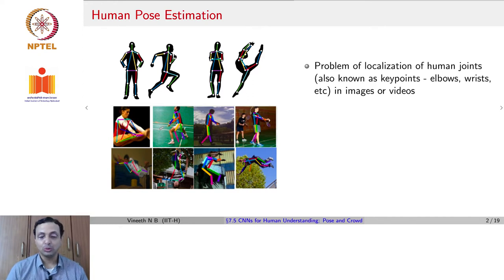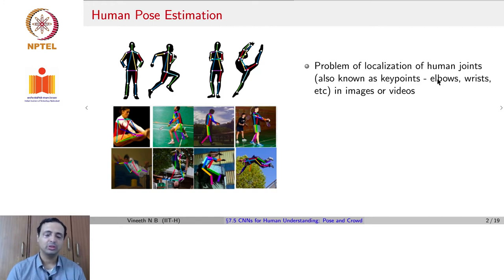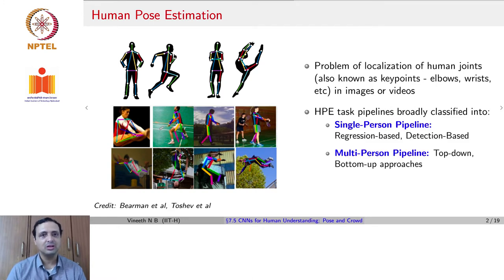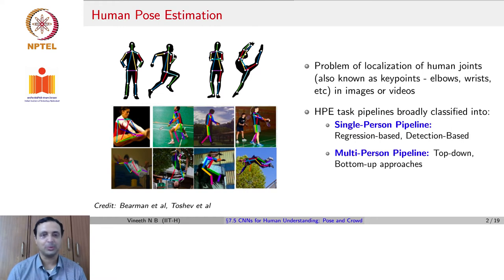The task of human pose estimation is the problem of localization of human joints — such as elbows, wrists, and so on — in both images and videos. This task could be used for sports analytics, or for systems like the Microsoft Xbox that detects your pose and asks your avatar to play a particular tennis shot or a golf swing.